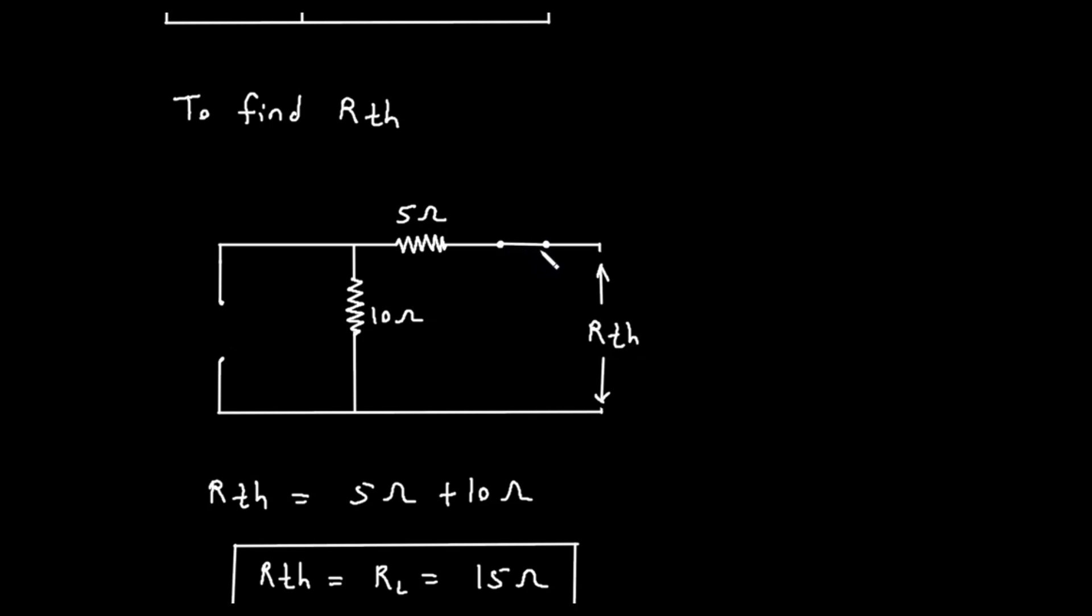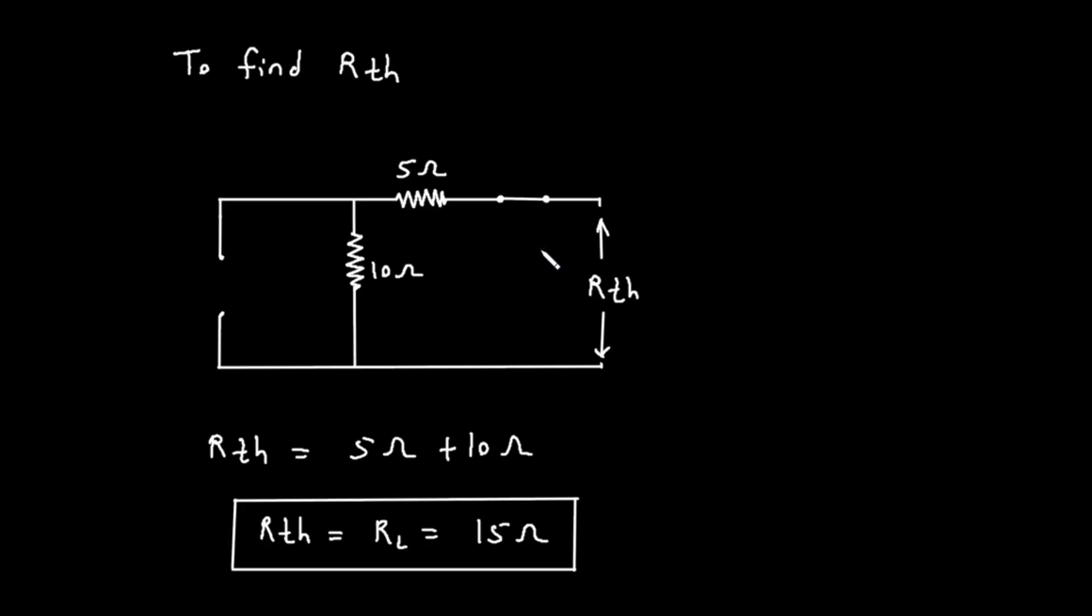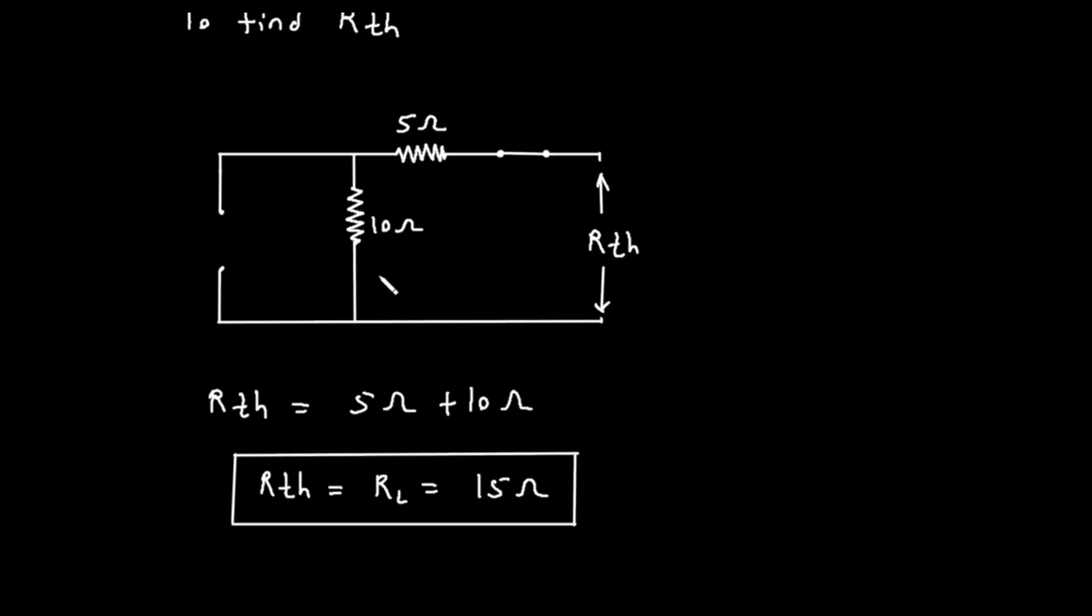Let's analyze this new circuit. We are looking into the terminals where R sub L used to be. From the top terminal, the path goes through the 5 ohm resistor. After the 5 ohm resistor, it reaches a junction. From this junction, the path continues down through the 10 ohm resistor to the bottom terminal.